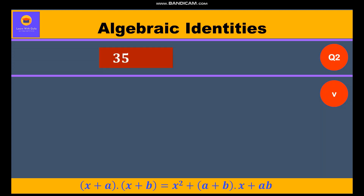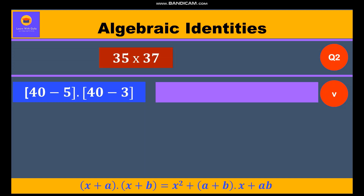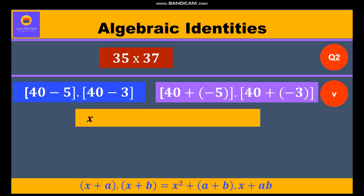Question 5: 35 into 37. Here, 35 can be written as 40 minus 5 and 37 as 40 minus 3. Taking the minus sign inside, we write 40 plus (minus 5) into 40 plus (minus 3). So x = 40, a = minus 5, b = minus 3. We substitute these in identity 5.